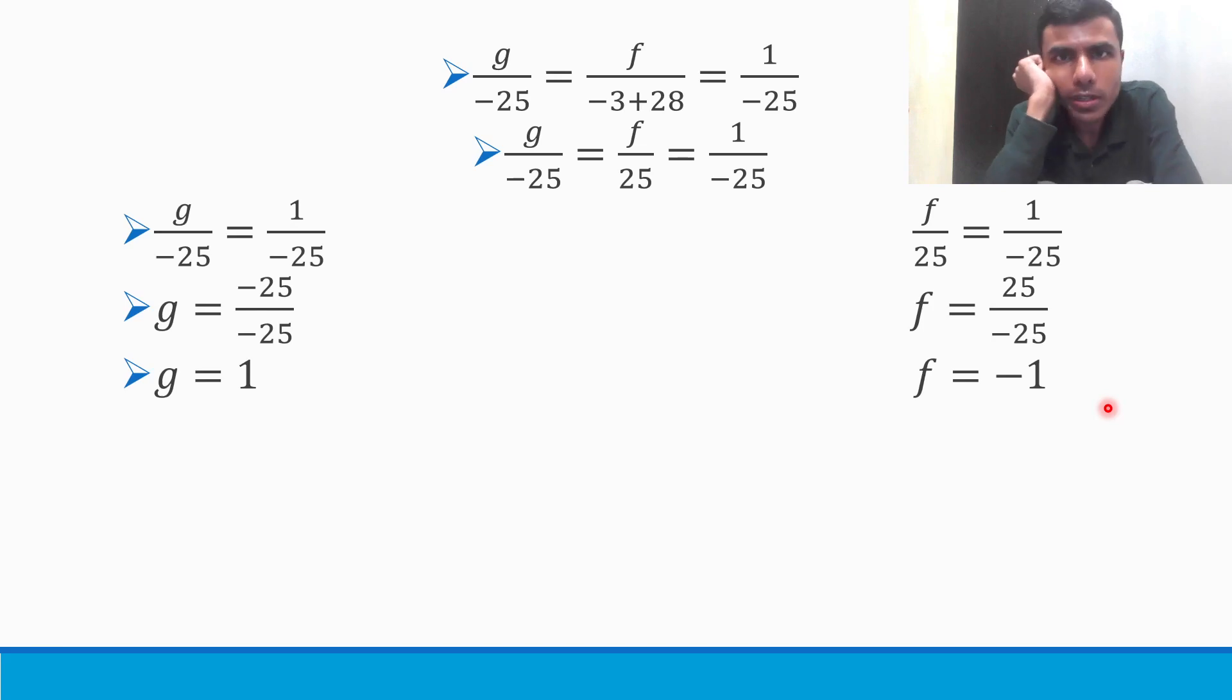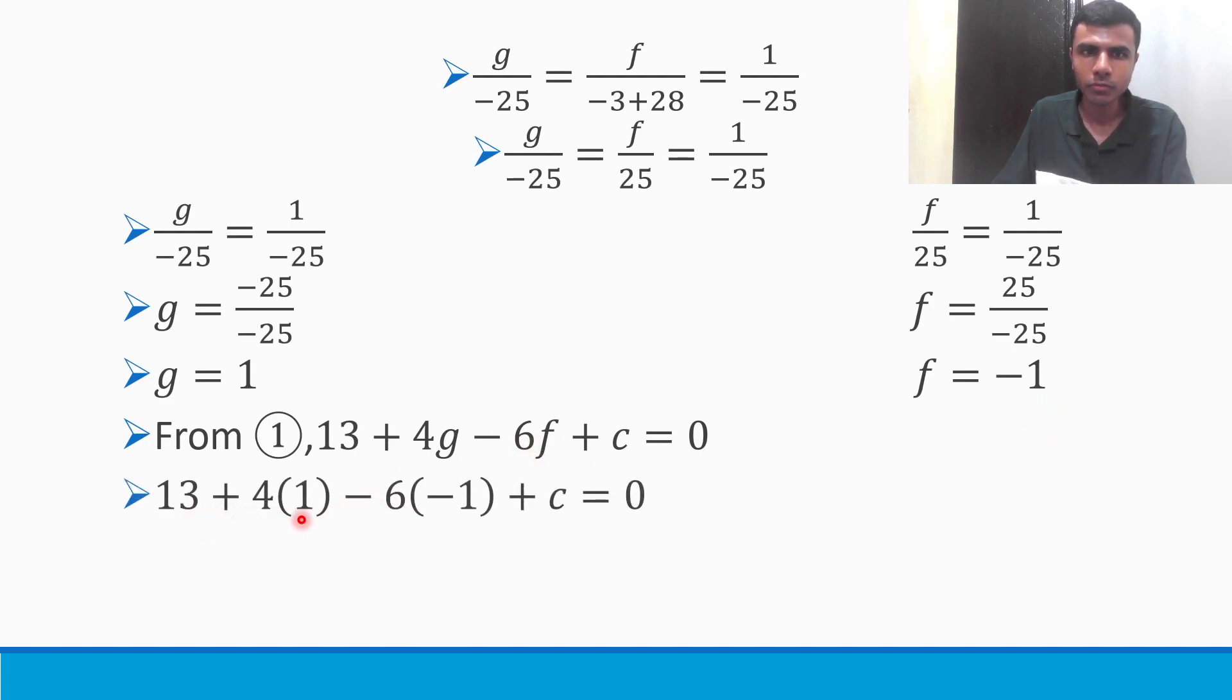Now I got g and f. What is pending? What is left out? I told you in the beginning, right? I need three things: g, f and c. Now how to get that c? Pretty simple. We already know what is g and f. So from the first equation, just put the g and f in the first equation and then you're done. Or you could put them in the second equation also. Anything is fine. We'll get the same answer. So g and f you can just substitute: g is 1 and f is -1. So 13 + 4(1) - 6(-1). -6(-1) is +6. So 13 + 4 + 6, 13 + 4 is 17. 17 + 6 is 23. So 23 + c = 0. And if I'll send this 23 to the RHS, I'll get c = -23. Done.